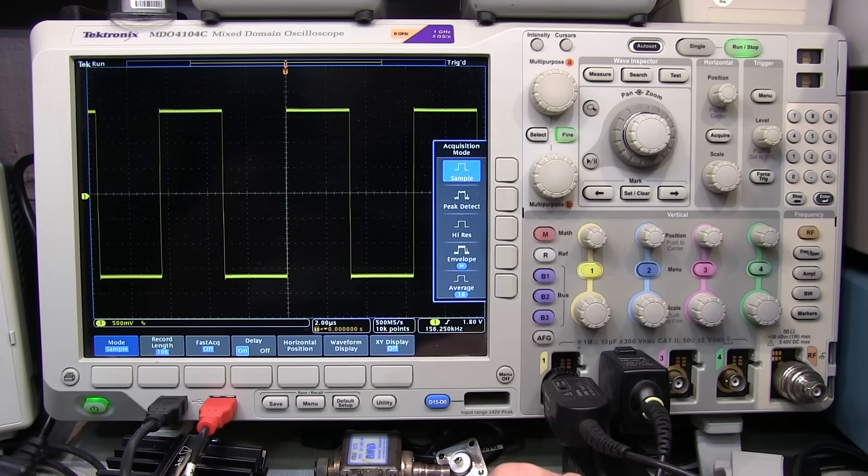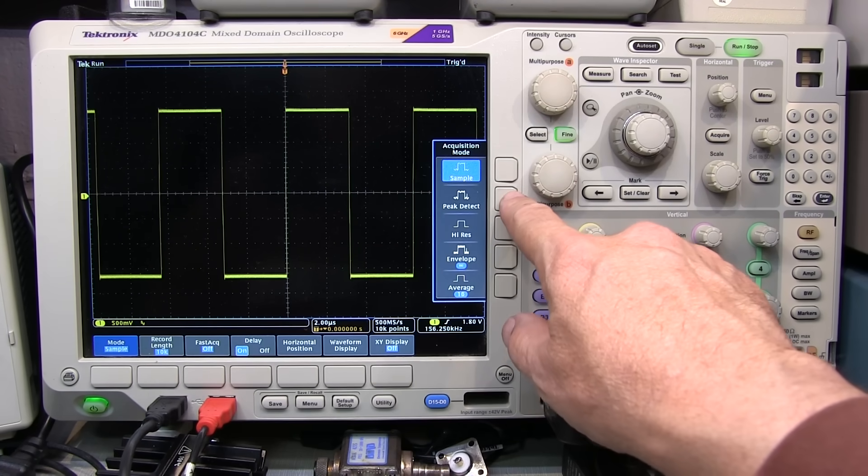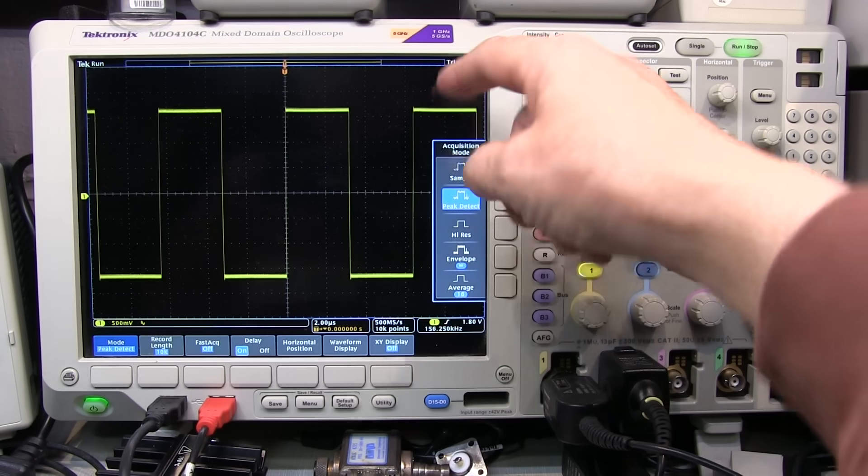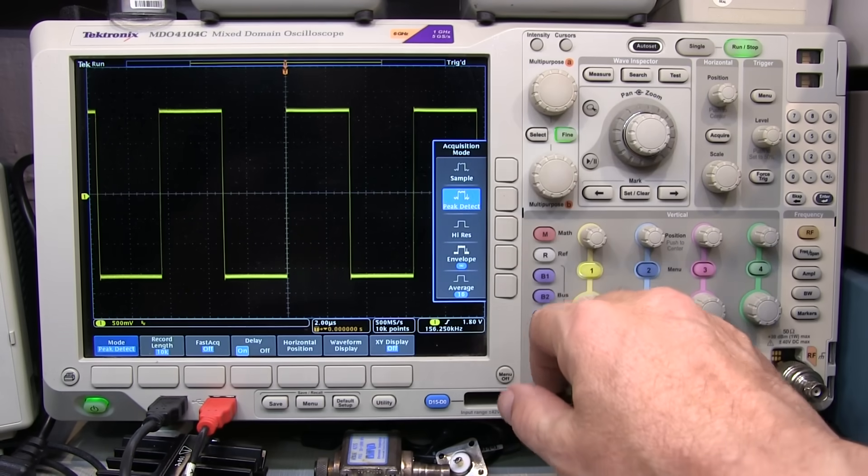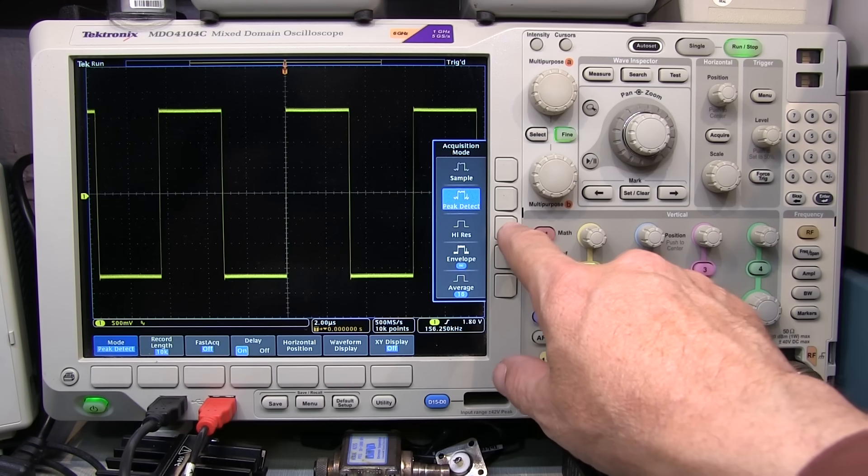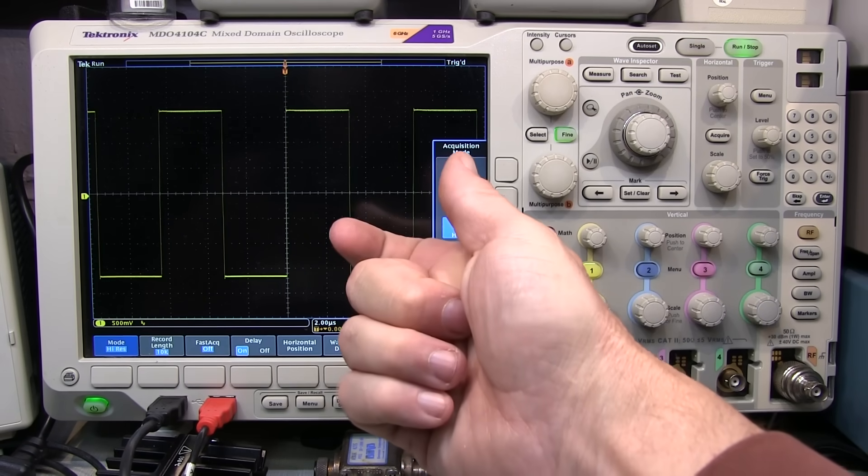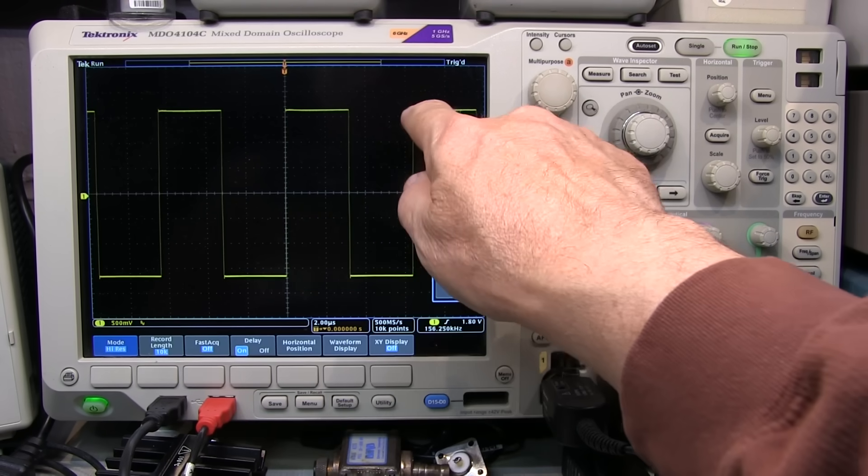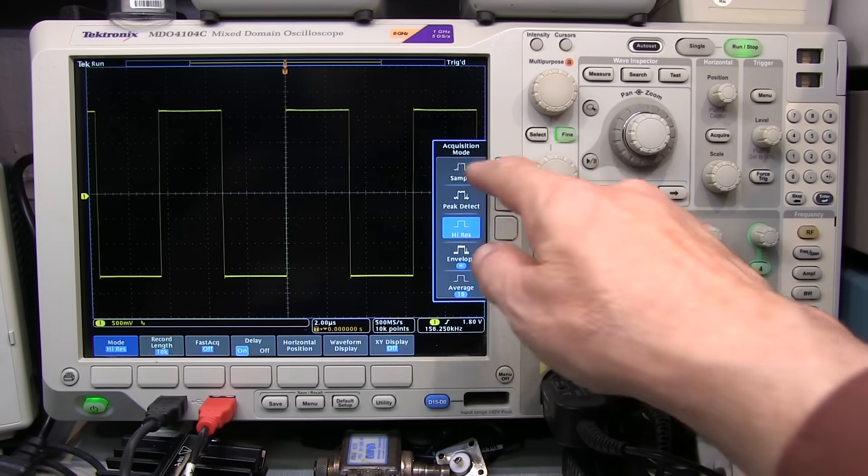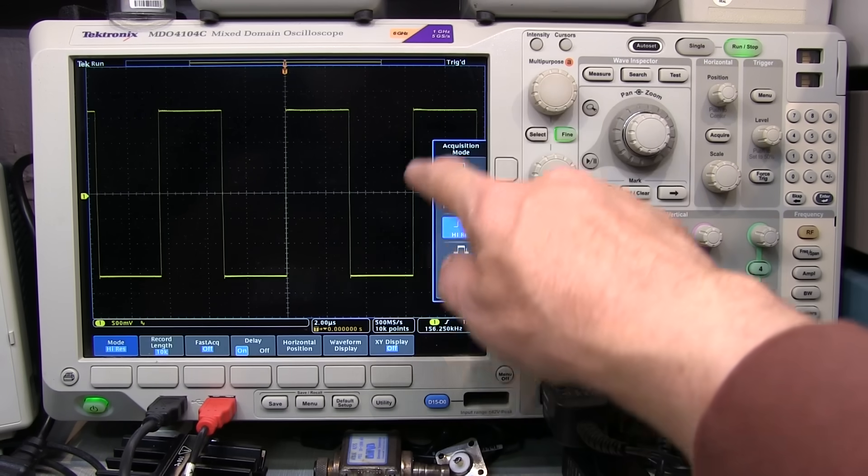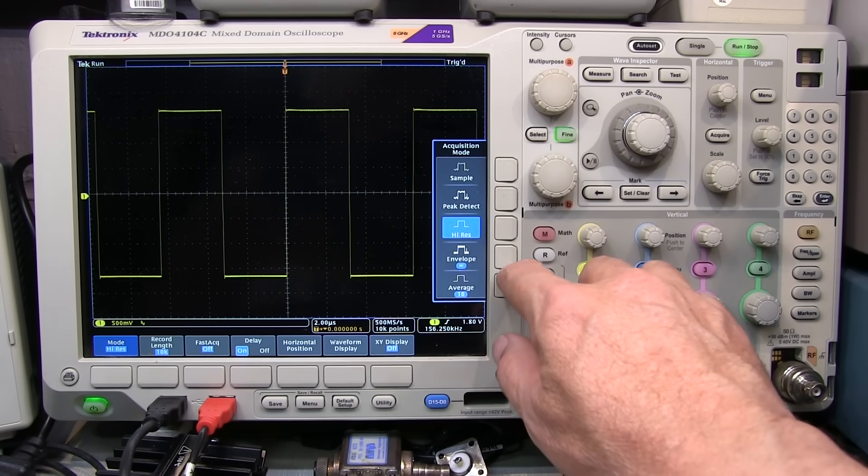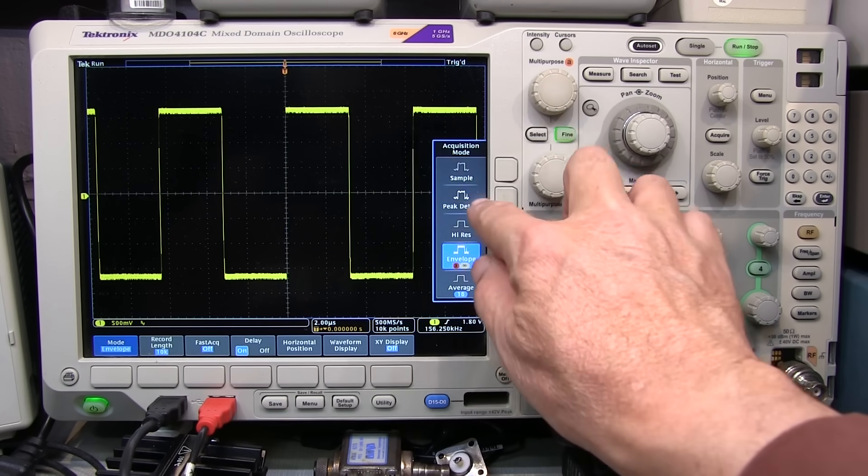There's also a peak detect mode, which will look through all those points that are going to be decimated and plot the highest and lowest values of them. There is a high res mode that does an in situ averaging of those points to give you one point for all the points that will contribute to a particular waveform point. So you can see that actually has an effect of low pass filtering the waveform and giving me some cleaner data.